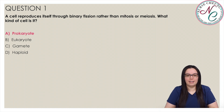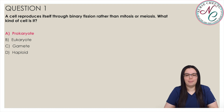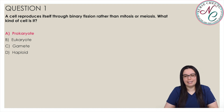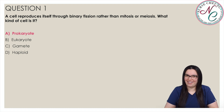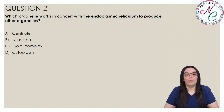Prokaryote cells lack a nucleus. Both mitosis and meiosis begin with DNA replication in the nucleus. Binary fission is the manner in which prokaryote cells divide into two distinct but identical cells.